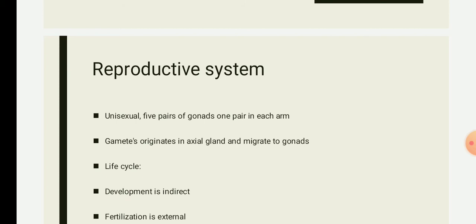In starfish, the reproductive system: they are unisexual, that is, sexes are separate and there is no sexual dimorphism observed. It has five pairs of gonads — one pair in each arm — situated at the base of the arm. Each gonad is enclosed in a genital sinus, and from each gonad a gonoduct arises which opens to the outside on the aboral surface by a minute pore known as the gonopore. From this gonopore the gametes exit the body.